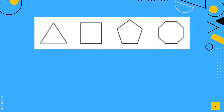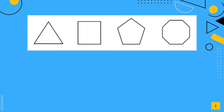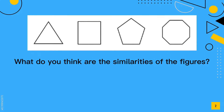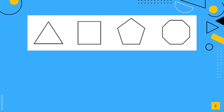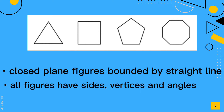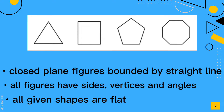Let's study these figures. What do you think are the similarities of the figures? They are closed plane figures bounded by straight lines. All figures have sides, vertices, and angles. All given shapes are flat.